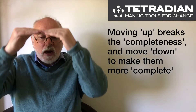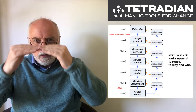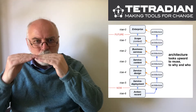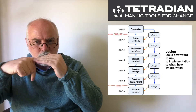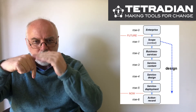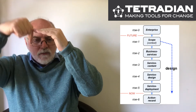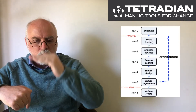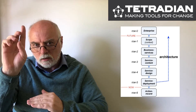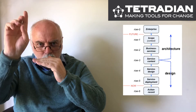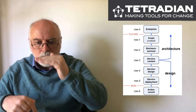We move up and down the stack all the time. At each point in that stack, architecture looks upward and design looks downward. From the top end of the stack, everything else looks like design. From the bottom of the stack, everything else looks like architecture. In the middle, architecture looks upward and design looks down. We keep repeating this pattern at the same layer of the stack.